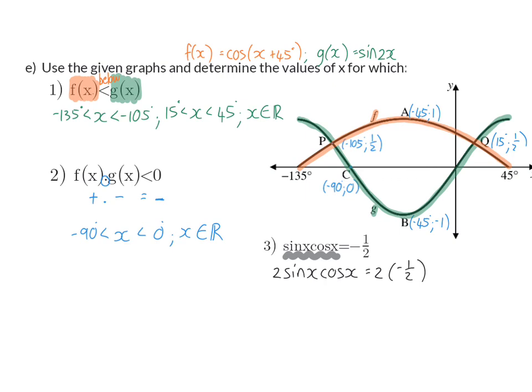On the left, I now have a double angle identity, and this can be rewritten as sin of 2x, and on the right, when I simplify, I have minus one.